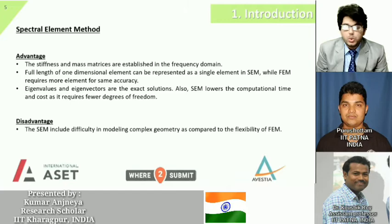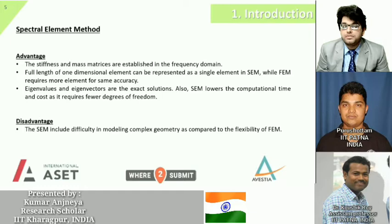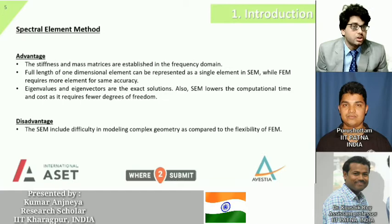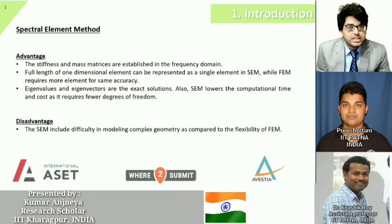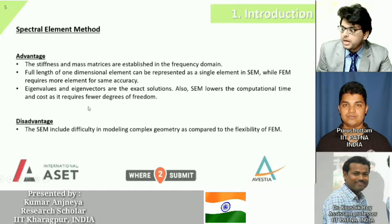For structural health monitoring of an actual structure, we generally make a finite element model. However, there are disadvantages: discretizing a beam into many elements leads to more calculations and reduced accuracy. The spectral element method has advantages over FEM — it represents stiffness and mass matrices in the frequency domain. Instead of many elements, a structural member can be represented as a single element, and the resulting eigenvalues and eigenvectors are exact solutions.